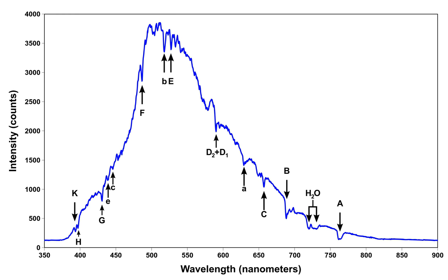Macroscopic Doppler broadening: radiation emitted by a moving source is subject to Doppler shift due to a finite line-of-sight velocity projection. If different parts of the emitting body have different velocities along the line-of-sight, the resulting line will be broadened, with the line width proportional to the width of the velocity distribution. For example, radiation emitted from a distant rotating body, such as a star, will be broadened due to the line-of-sight variations in velocity on opposite sides of the star. The greater the rate of rotation, the broader the line. Another example is an imploding plasma shell in a z-pinch.